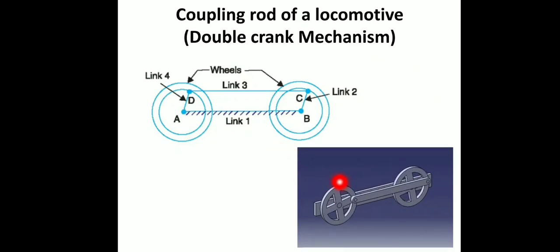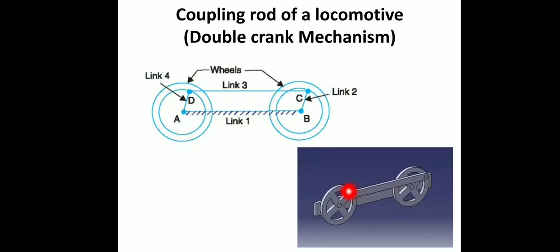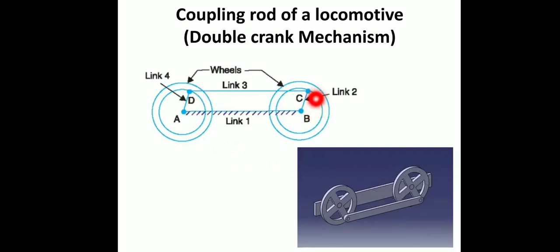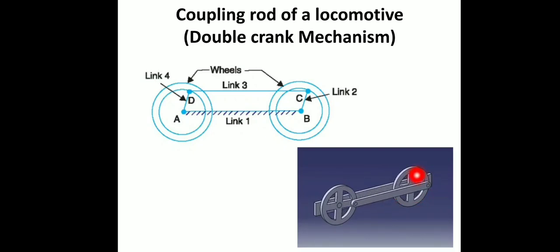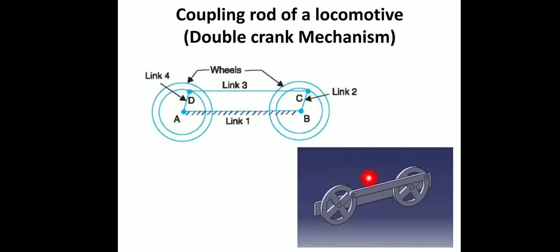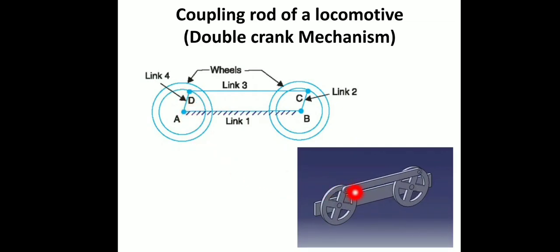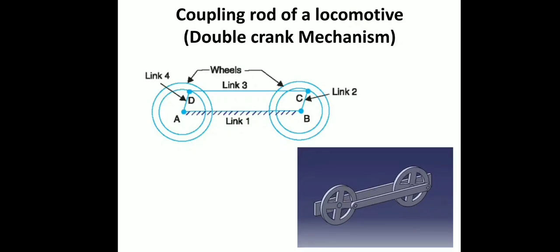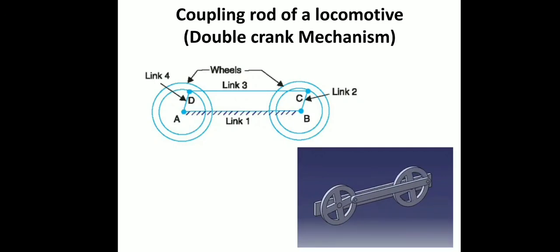The locomotive parts are shown in the animation. One link is fixed. The second inversion uses the crank. The coupler connects the links, and the coupling rod for a locomotive links the wheels together, maintaining the same rotational motion. That is the coupling rod for a locomotive.